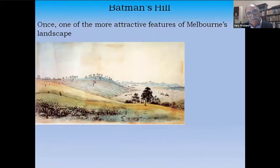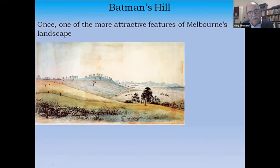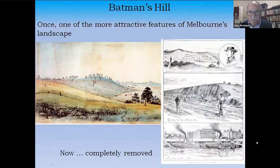People came to Victoria from the mid-1830s onwards and brought these attitudes with them, and the effect on the landscape was widespread. The immigrant colonists felt they had licence to alter any aspect of the landscape that they felt needed to be improved — one could even see it as improving God's work. This is a lovely watercolour of Batman's Hill, a feature of the landscape for which you will now look in vain, because it has been completely removed.